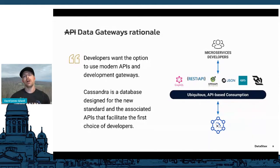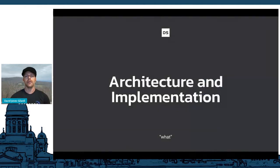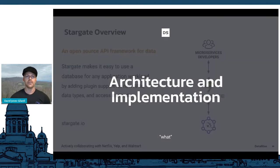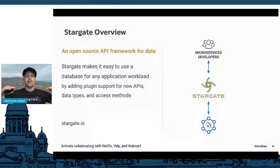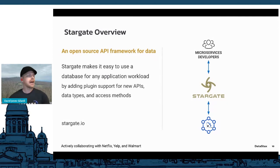On the data store end, Stargate provides a pluggable architecture allowing you to plug in multiple data stores, giving DBAs control in that layer while letting developers just talk to the APIs. Let's look at how this is architected. Stargate is a proxy layer that lives between developers and the data store — in this case Apache Cassandra, though it's not limited to only Cassandra.